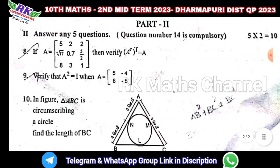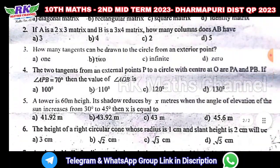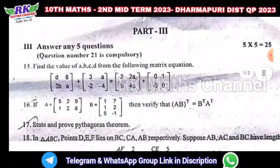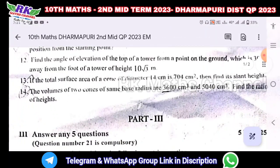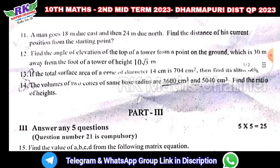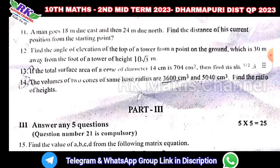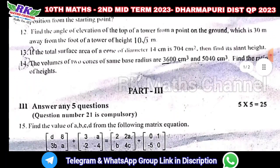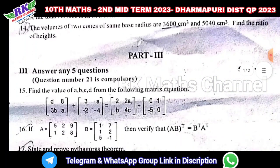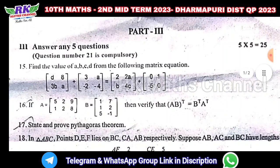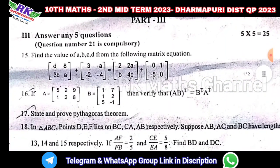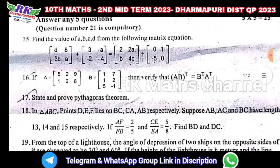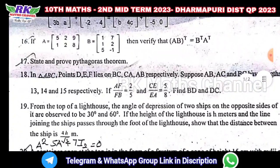On the next page, on the reverse side of the PDF — question number 14 is a compulsory question. Next, Part 3: 5-mark questions, five questions. Question number 21 is a compulsory question.